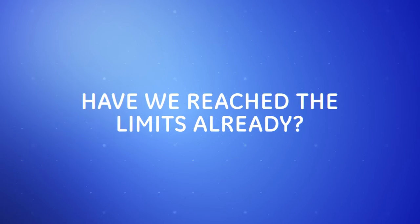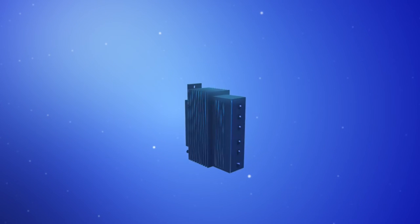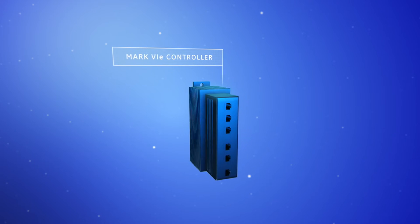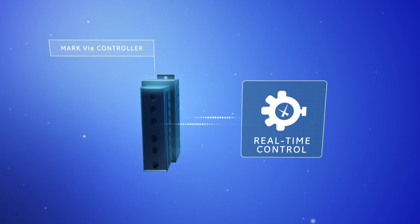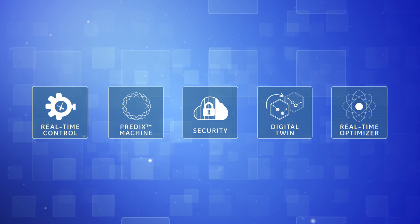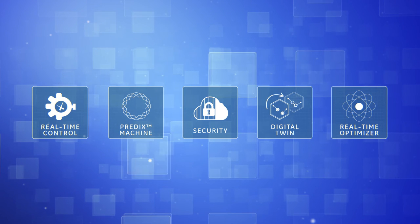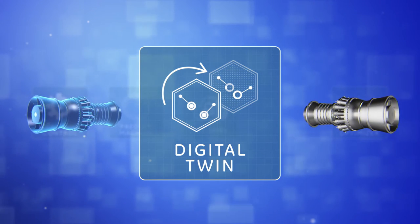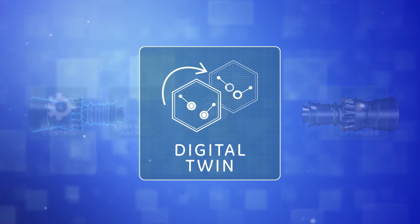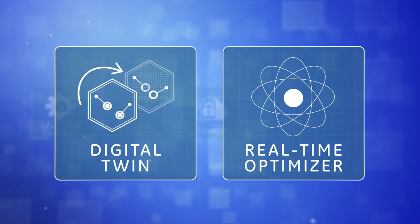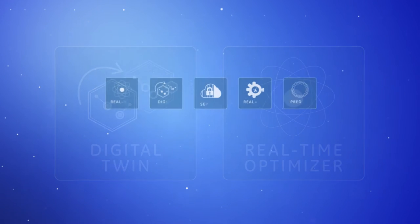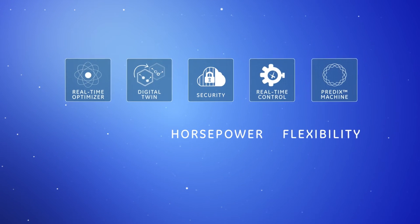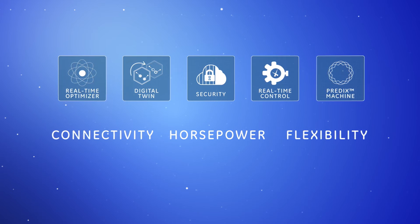Have we reached the limits already? Not even close. We are creating a new era in controls, where instead of a single application running on a controller, we can have dozens of apps all running simultaneously. This could be machine apps like Digital Twins that embed detailed engineering knowledge into predictive models. Other machine apps are real-time optimizers that determine the optimal way to run our assets. These kinds of apps require more horsepower, flexibility, and connectivity than traditional control systems can provide.